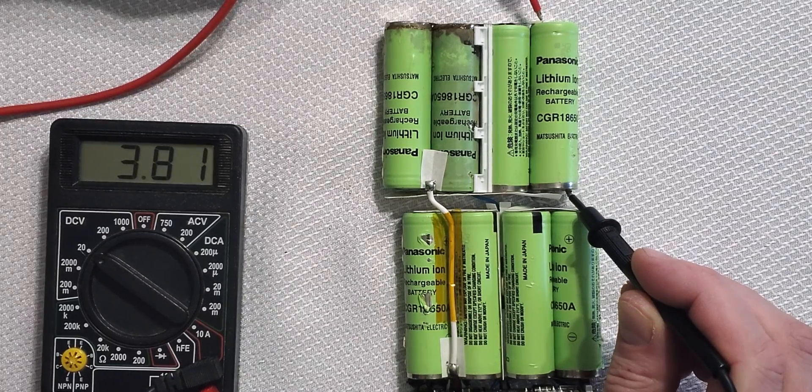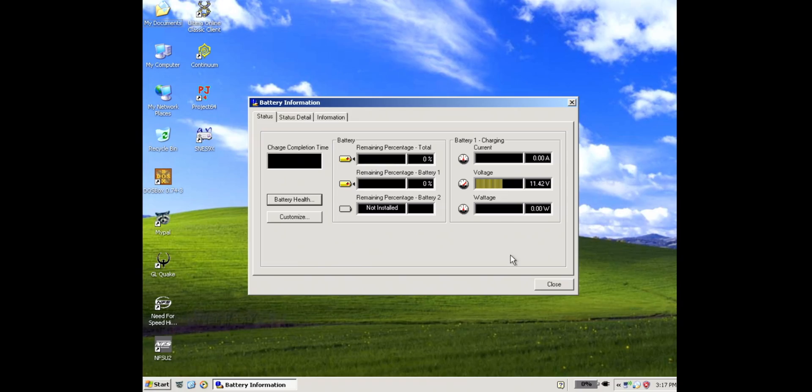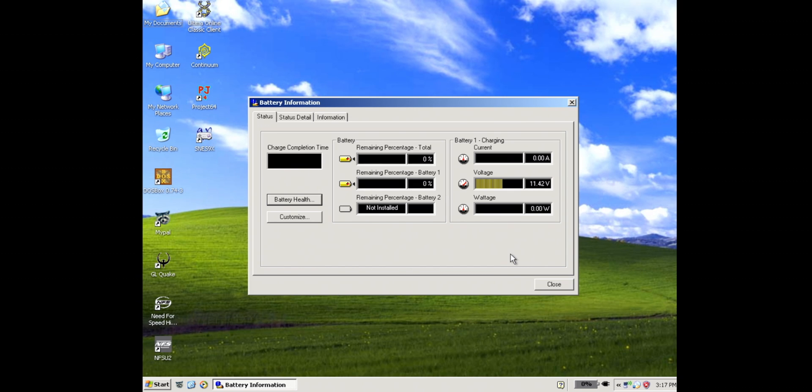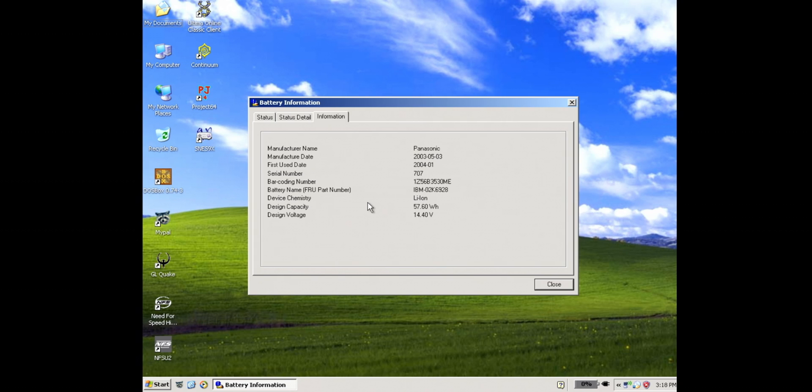So what happened here? Was I hoodwinked? Was I bamboozled? The short answer is no. While it shouldn't have failed so catastrophically, it is old. Depending on your source, lithium-ion batteries last anywhere from 3 to 12 years. And by my calculations, we're just about double that.